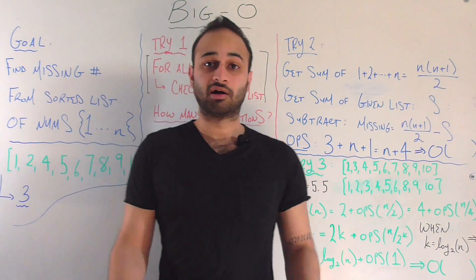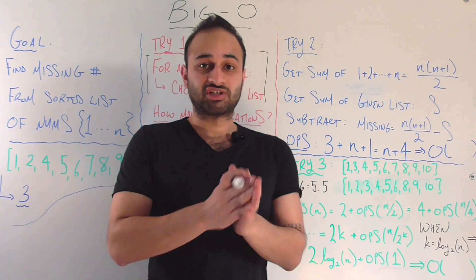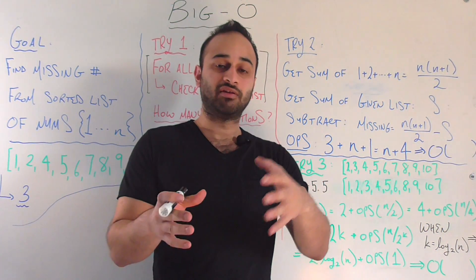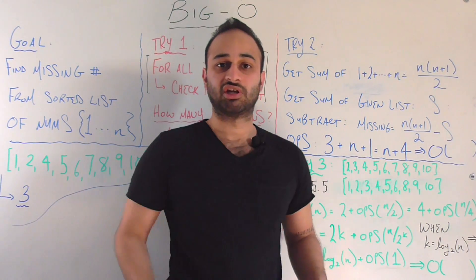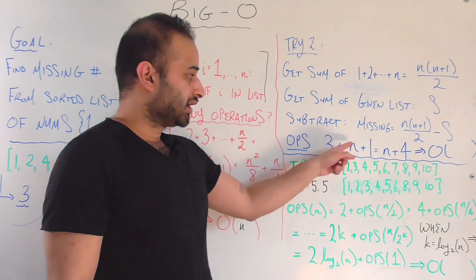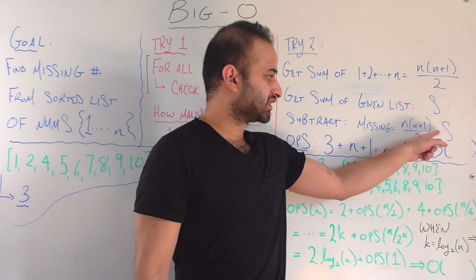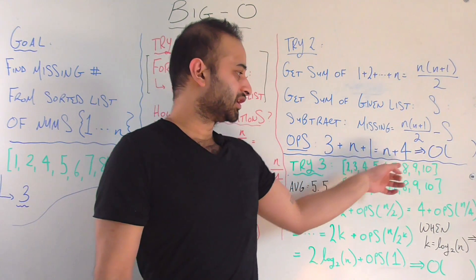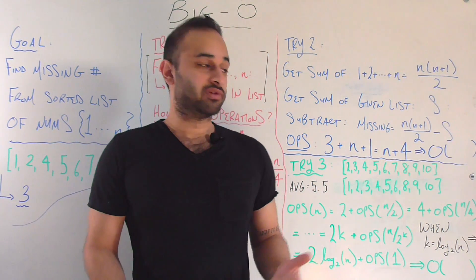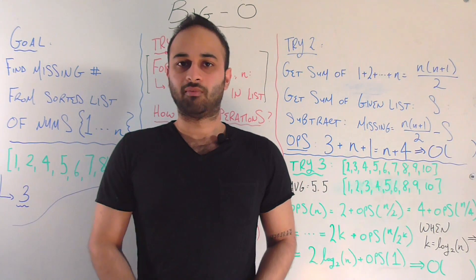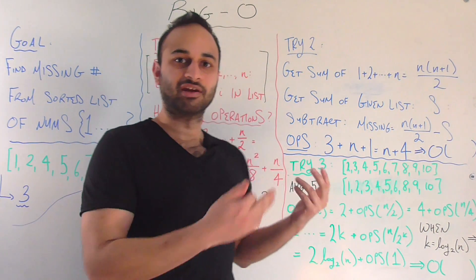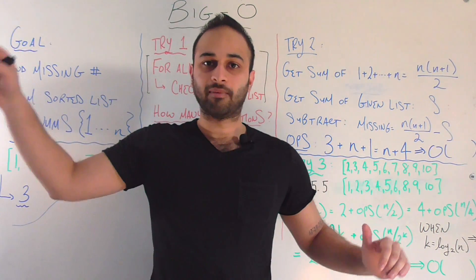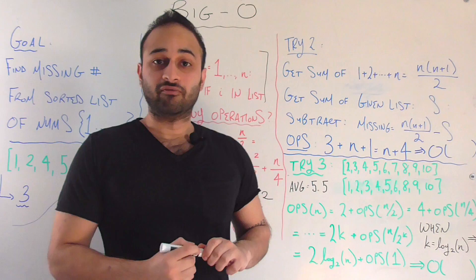The biggest bulk of time comes from the second step: summing up all the numbers in the given list. If you're summing up a list of n numbers, you're going to do roughly n additions, because each number gets added to accumulate some kind of running sum. And the final subtraction is one more operation. So the number of operations required is n plus four for a list of size n. Looking at n and four, four is obviously just a fixed constant and n is the one growing over time. So this is big O of n.